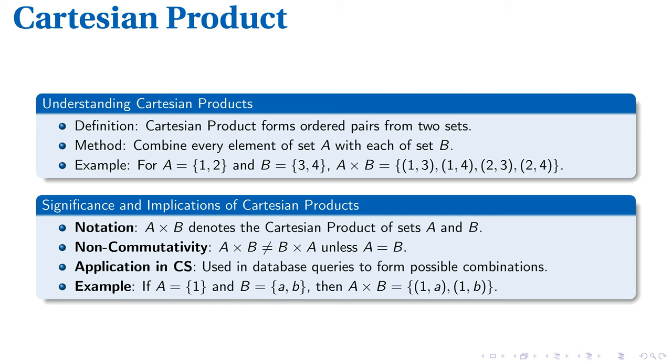Cartesian products paint a clear picture of the relationships between sets. Fundamentally, it forms ordered pairs from constituents of two sets. The concept is best understood with an applied example. Let's take two sets A and B. A is {1, 2}, while B is {3, 4}. Performing a Cartesian product on these generates a set of pairs, where the first component hails from set A and the second from B. Thus, we obtain A × B = {(1, 3), (1, 4), (2, 3), (2, 4)}.